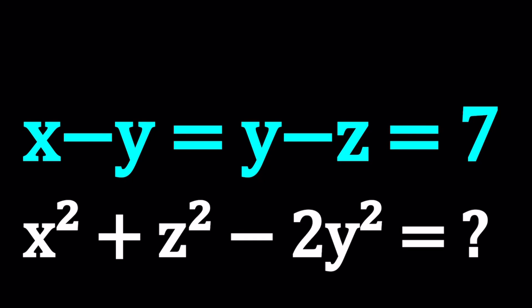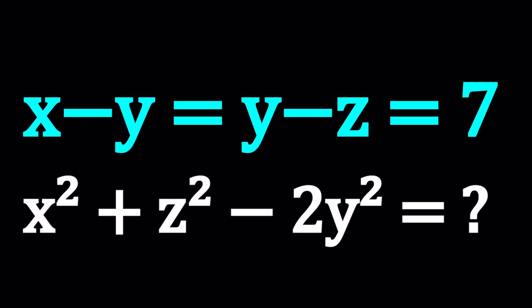Hello everyone. In this video, we're going to be solving a nice system of equations. We have x minus y equals y minus z equals 7, and we're going to evaluate x squared plus z squared minus 2y squared based on the givens.